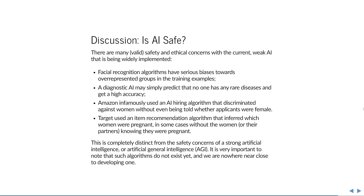Another example: a diagnostic AI predicting whether you have a very rare disease has a problem — if the disease is rare, the network can just say nobody has the disease and achieve very high accuracy by classifying everyone who doesn't have the disease correctly. Amazon also used an AI hiring algorithm that turned out to discriminate against women — it compared against a database of current employees who were mostly men, and from resumes inferred which applicants were women through language patterns and whether they attended women-only colleges, then disqualified them even though gender was not explicitly in the application.